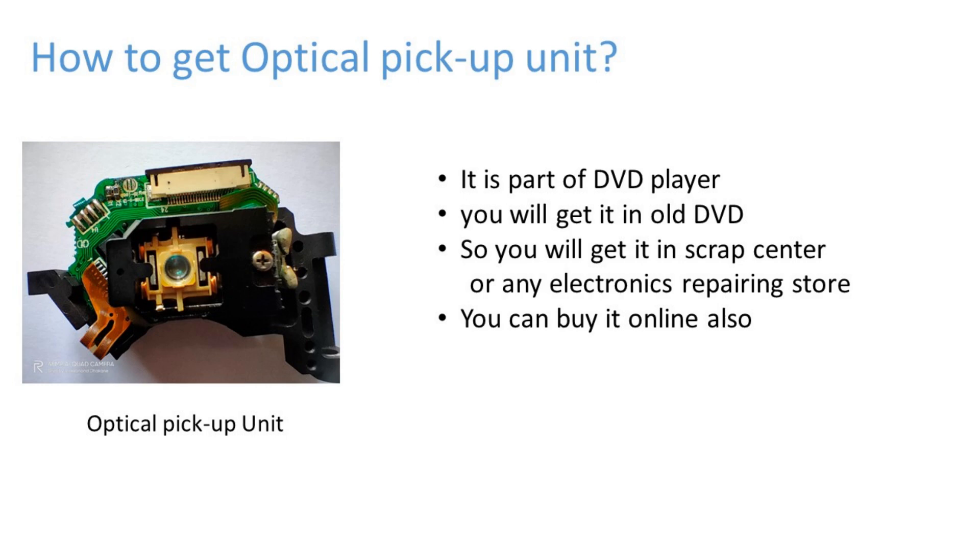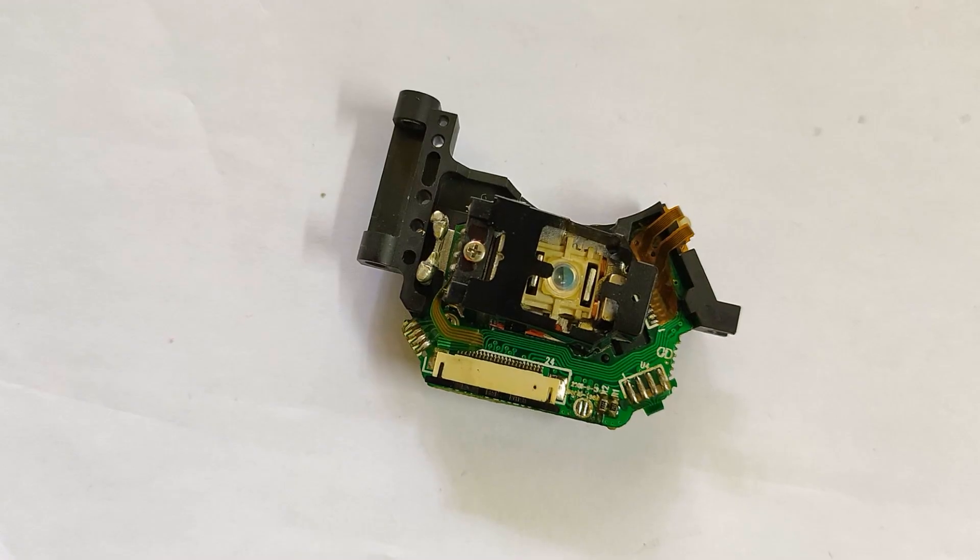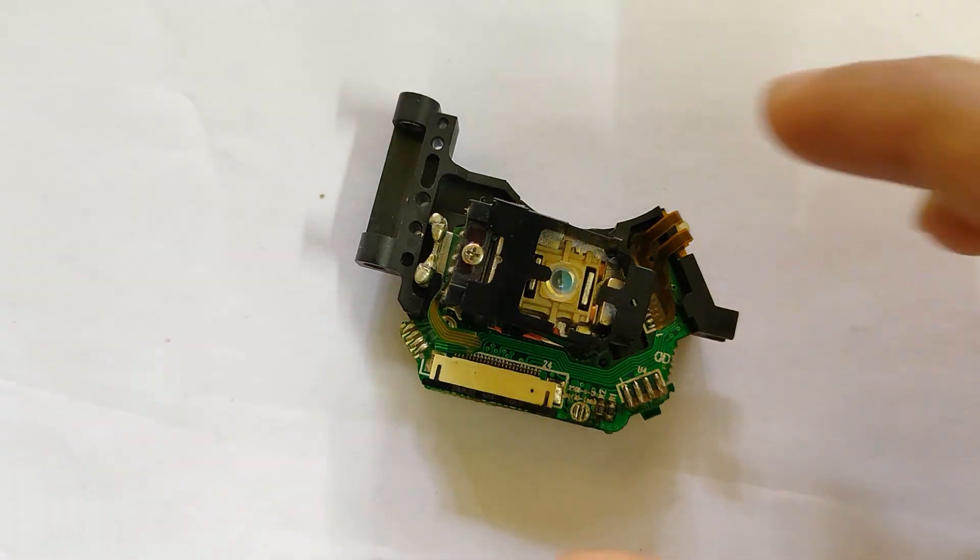Now, how to get the optical pickup unit. It is a part of a DVD player, so you can get it in an old DVD. You can get it in a scrap center or electronic repairing store, or you can buy it online. So this is our optical pickup unit. Now we have to remove this very gently because the lens is very delicate.